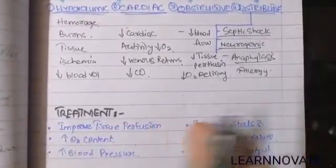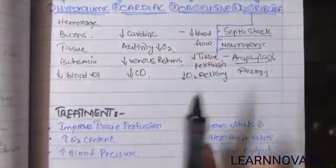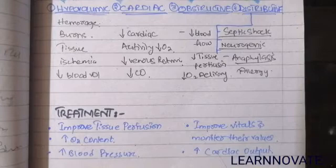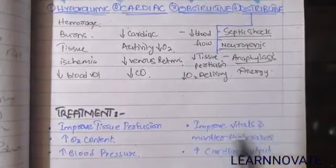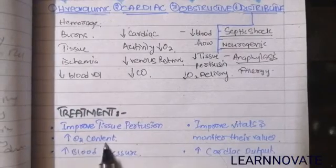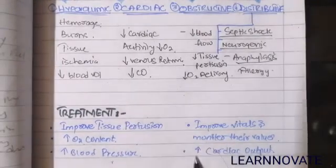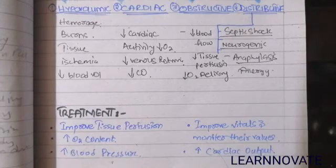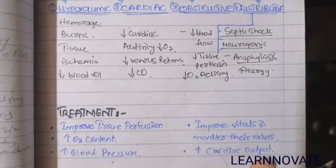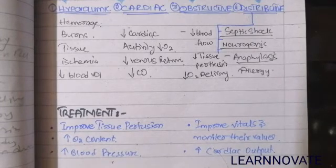To treat circulatory shock: in mild or moderate conditions, the shock can be treated, but in severe shock, treatment may not be possible and the patient may die. Vital signs should be monitored to assess the progress of the shock. Treatment involves improving tissue perfusion ratio, increasing oxygen content, increasing blood pressure, increasing cardiac output, and increasing venous return to the heart. ECG monitoring and urine output are major indicators of the stage of shock.